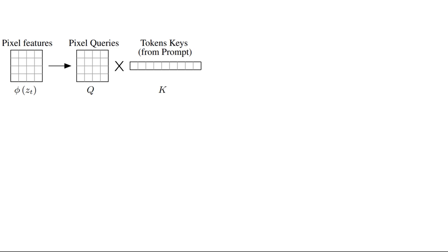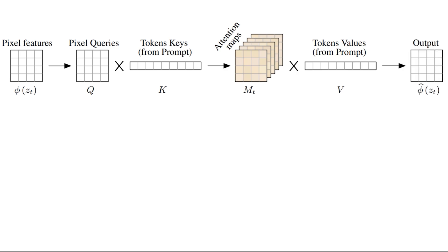We do the multiplication and we achieve the attention maps that we finally multiply by value, which is again text tokens. We have our final output that always has the same shape as the query, in this case the pixel queries, which we need for further layers and the denoising steps.